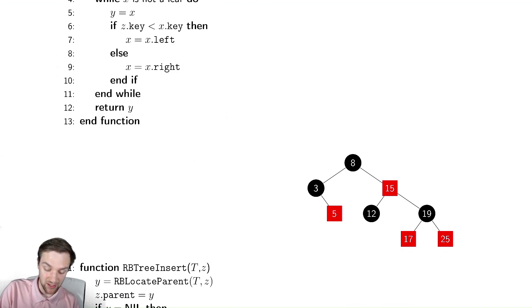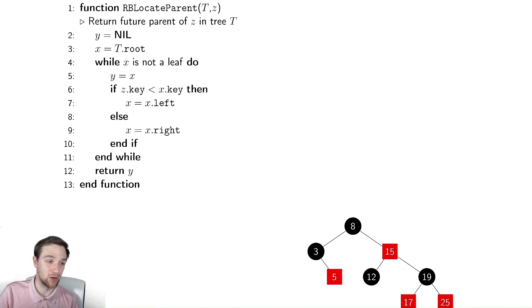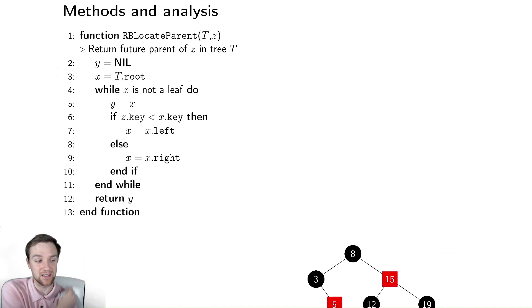So in this example here, my parent should be 3 and not this random nil pointer I have over there. So just to be a bit careful, we need to have our code look a little bit different, but this is effectively the exact same code for locating the parent of our node to be inserted as we had for the binary search tree.